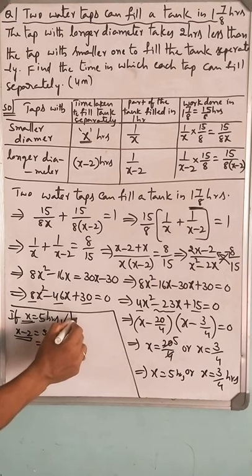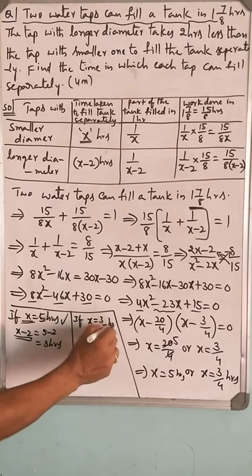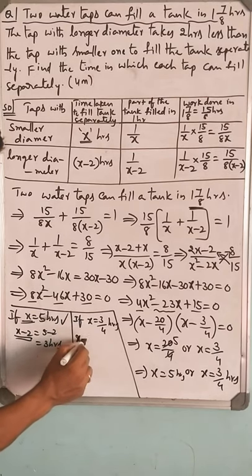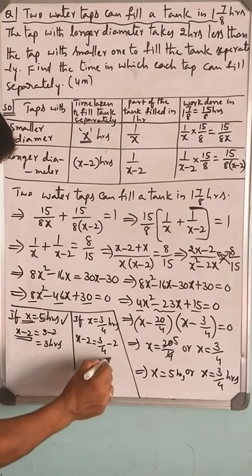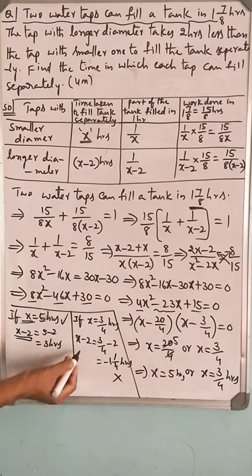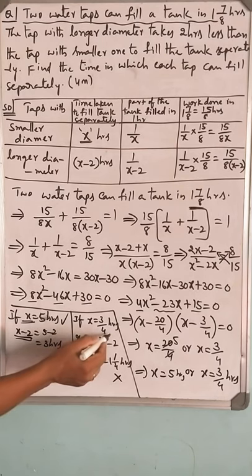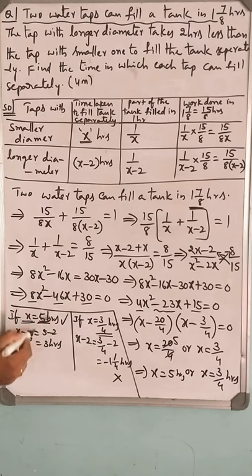Case 2: if x equals 3/4 hours, then x minus 2 equals 3/4 minus 2, which becomes minus 5/4 hours. As time cannot be negative, you cannot consider this value, so 3/4 cannot be considered.